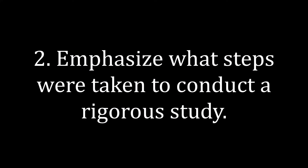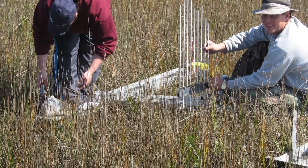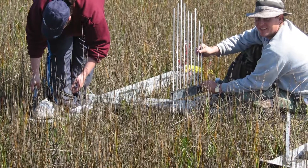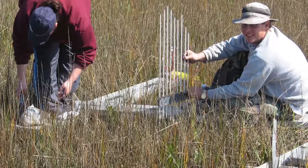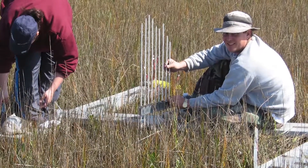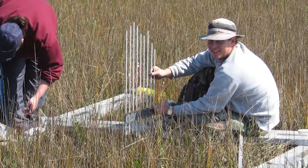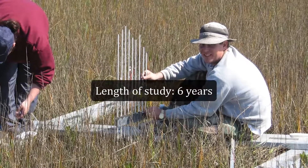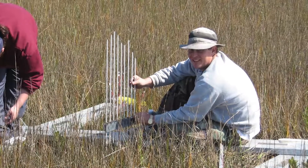Step 2: Emphasize what steps were taken, experimentally and statistically, to conduct a rigorous study. Although it's always important to show that you used up-to-date methods and a solid experimental design, certain points may need to be emphasized to address potential criticisms about negative findings. For example, one possible criticism is that the experiment did not last long enough to detect an effect. To head off such a criticism, we pointed out that our study lasted six years, the implication being that we allowed plenty of time for a difference to be detected if one existed.